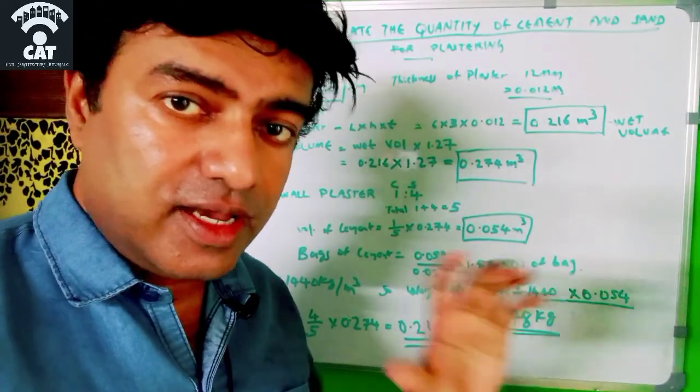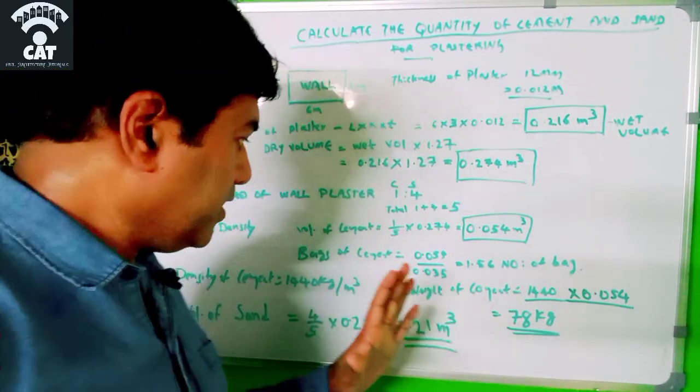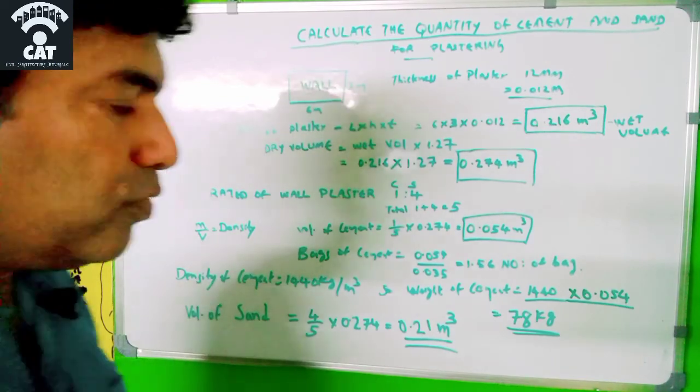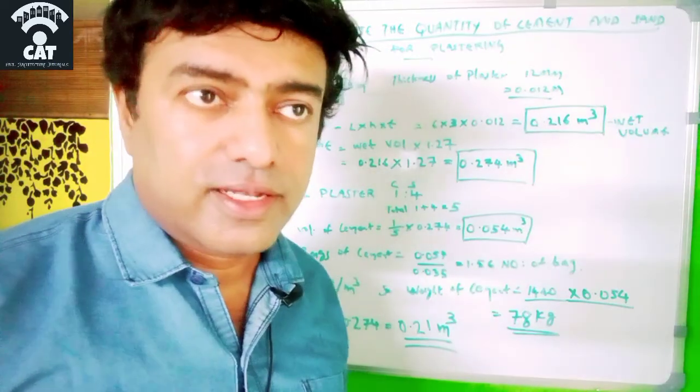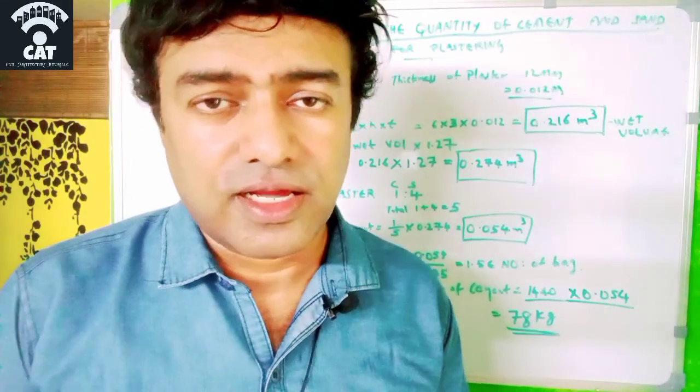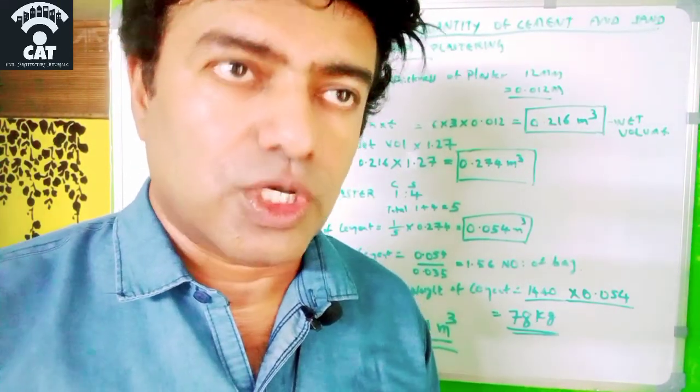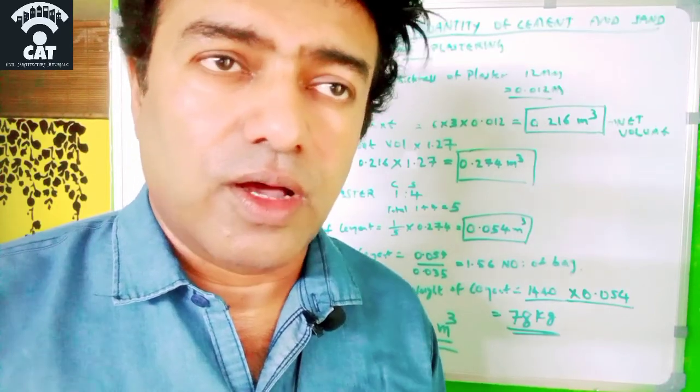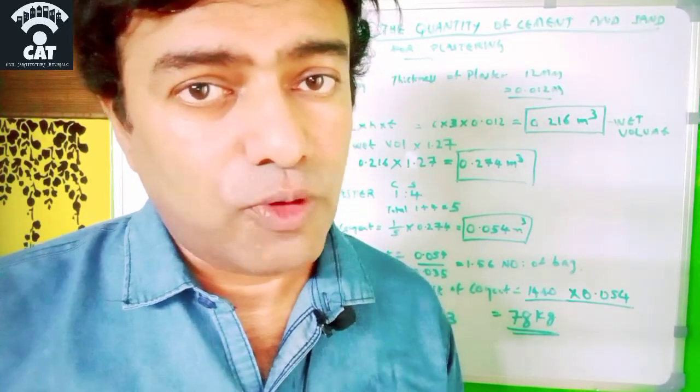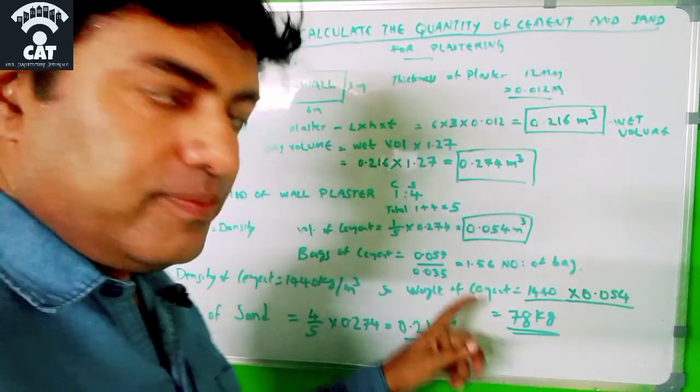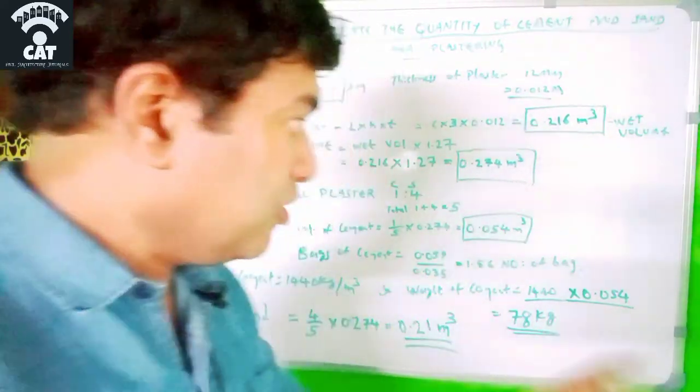Now we have to know how much will be in bags. We know that cement comes from the shop in bags of 50 kilos per bag. The volume of one bag is 0.035 cubic meters.